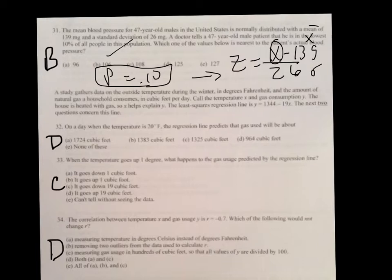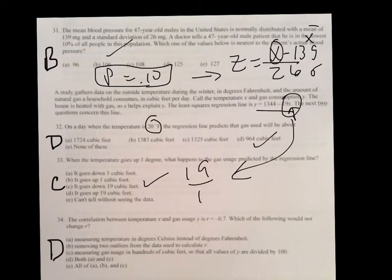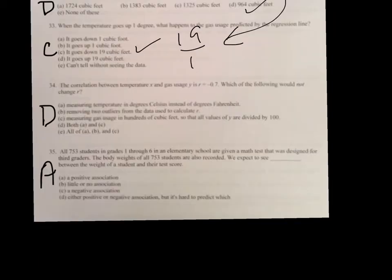On number 32, you're going to use this line of best fit right there for number 32 and 33. Now, it says, as a prediction, when the temperature is 20 degrees, one thing you have to do is plug in 20 for X. And in this case, you get D for the answer. And when the temperature goes up one degree, what happens to the gas usage? It goes down 19 cubic feet. That's referring to the slope. Now, remember, when you're dealing with correlation, both A and C will not affect it. So, changing it from Celsius to Fahrenheit. So, when you change the unit of measure. And also, measuring gas usage in hundreds of cubic feet. So, if you're consistent with all your data, that's not going to affect your correlation either.